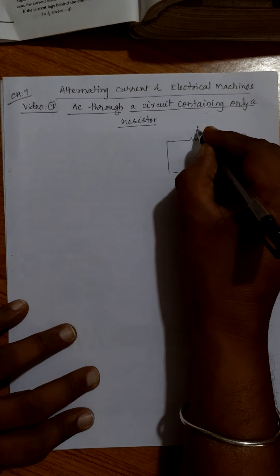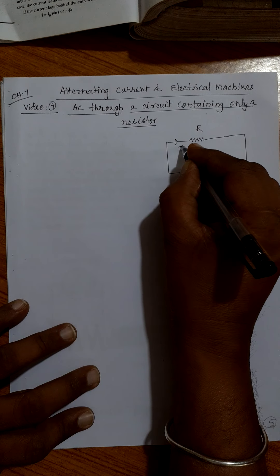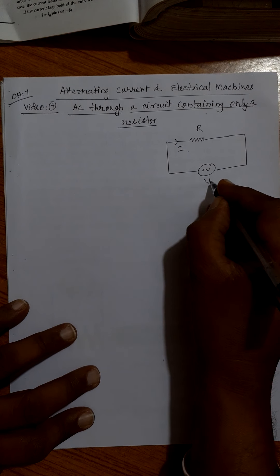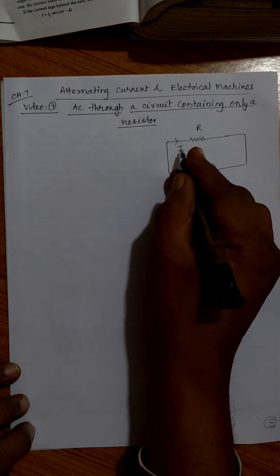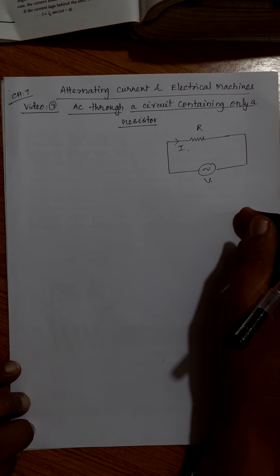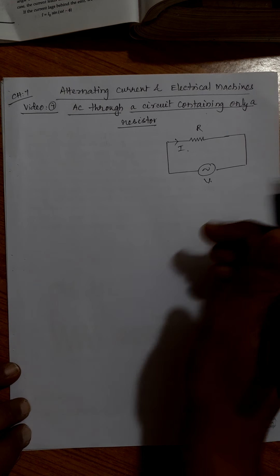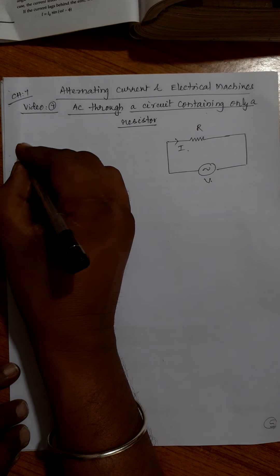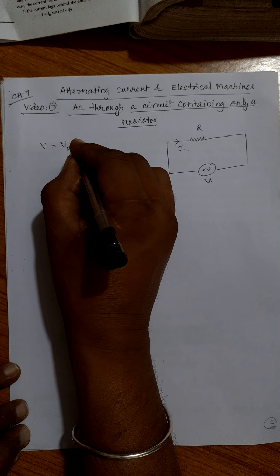So take a resistor connected to AC source. At any instant the current is I, at any instant the voltage is V. I am talking about V and I as instantaneous values.